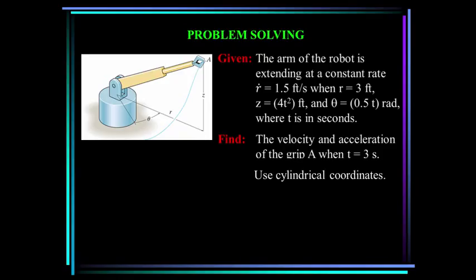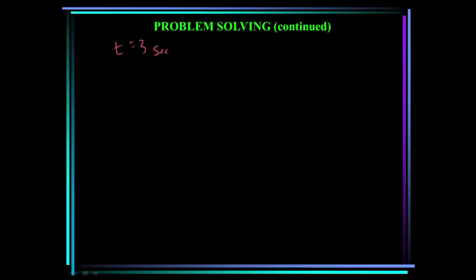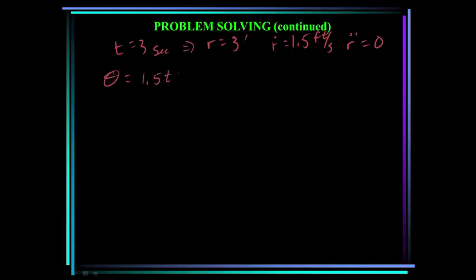Here's another problem. The arm of this robot is extending outward at a constant rate of r-dot equals 1.5 feet per second. When r equals 3 feet, z equals 4t squared feet, and theta equals 0.5t radians, where t is in seconds. Find the velocity and acceleration of the grip — the end of the arm — when t equals 3 seconds. At t equals 3 seconds: r equals 3 feet, r-dot equals 1.5 feet per second. Since the extension rate is constant, r-double-dot equals 0. Theta equals 0.5 times 3 equals 1.5 radians (at t equals 3), theta-dot equals 0.5 radians per second, and theta-double-dot equals 0.